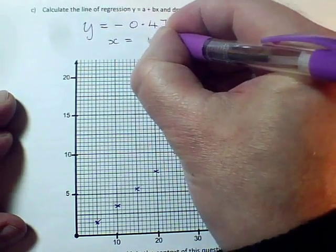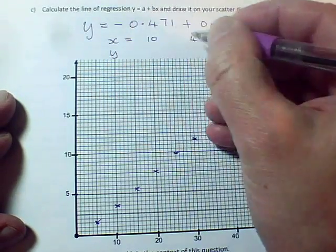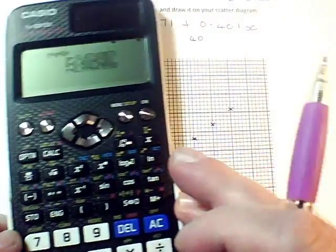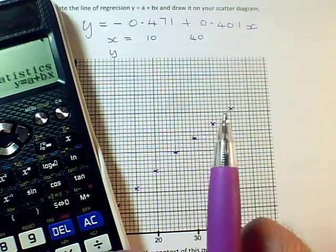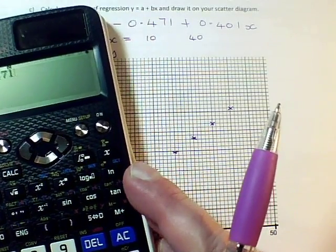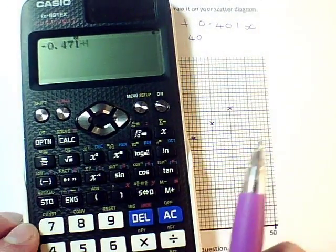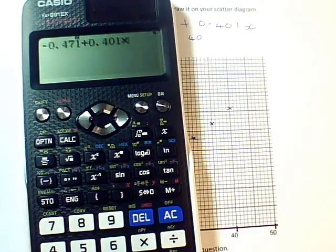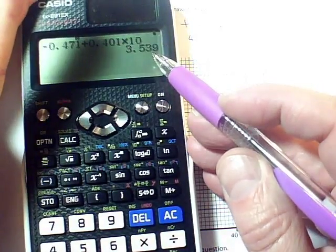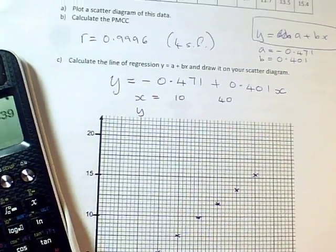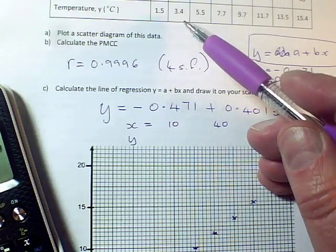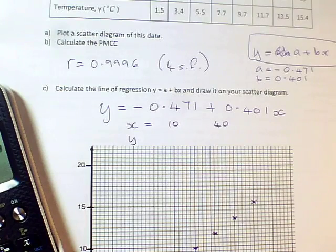So when X is 10, when X is 40, I'm going to get Y values using the equation of, so substitute X equals 10 into this calculator. So I want to do minus 0.471, plus 0.401 times my first X value, which is 10. So I'm going to get 3.539, 3.54. Notice the value from the original table wasn't exactly that. It was 3.4, not 3.54. So there is a tiny difference here. And I may even be able to see on my graph that I've plotted the point in a slightly different place.